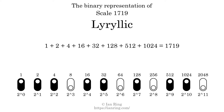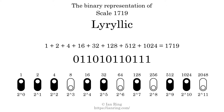That is why the scale number, in decimal, is 1719. The scale number not only enumerates the scale with a unique index, but it also literally describes the tonal content of the scale. Represented as a binary number in base 2, the scale number is 0, 1, 1, 0, 1, 0, 1, 1, 0, 1, 1, 1, 1.